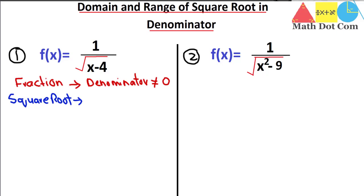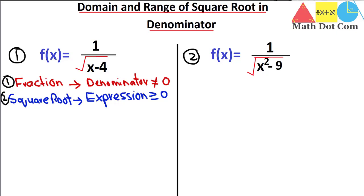The expression inside the square root needs to be greater than or equal to zero, because negative values under the square root give a complex number. In case of a fraction, dividing by zero gives an undefined number. So these two conditions need to be applied on the given function f(x) to get the domain and range.